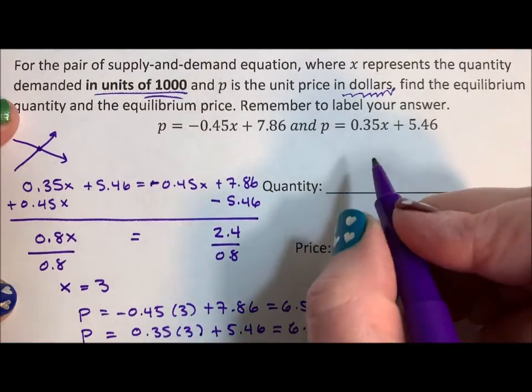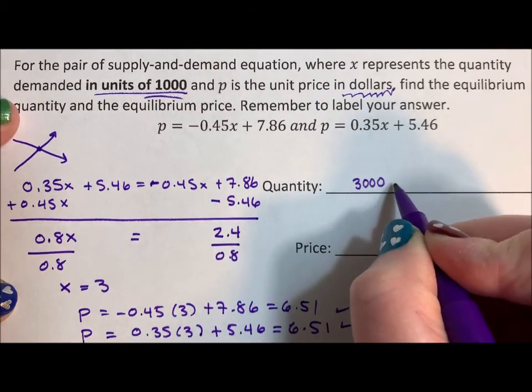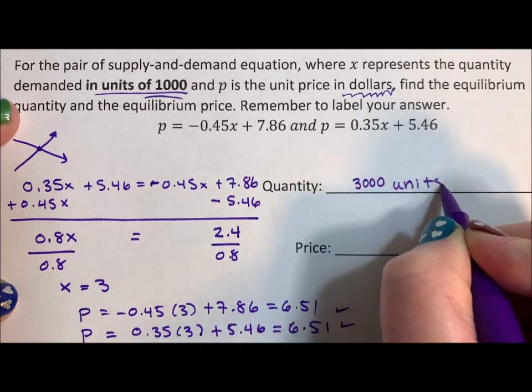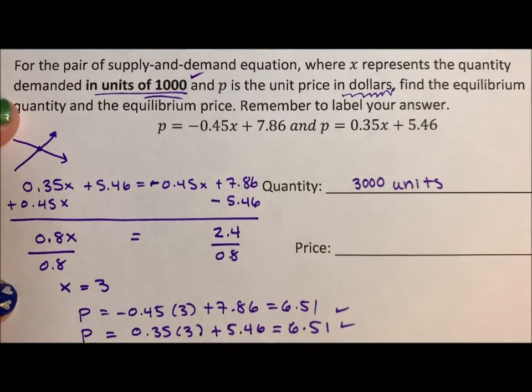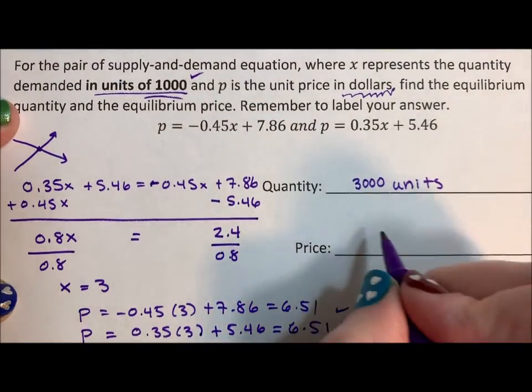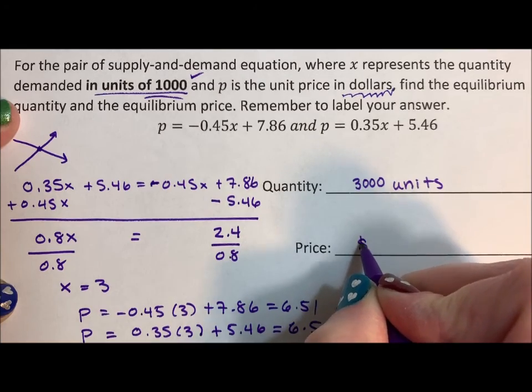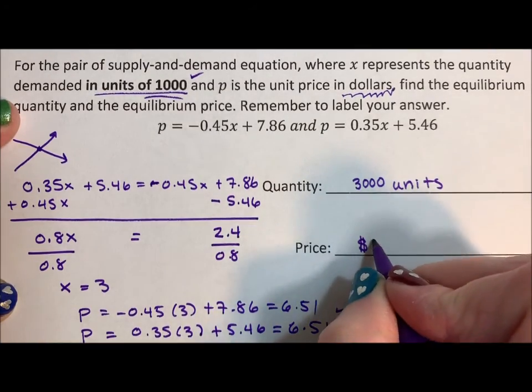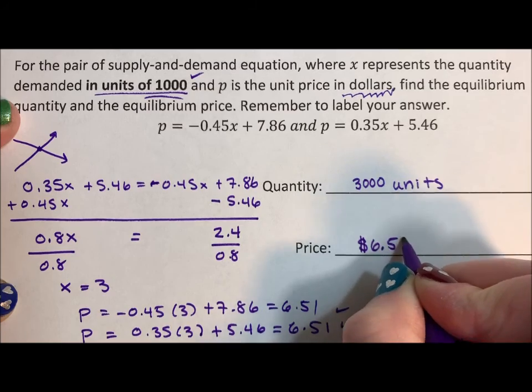So my quantity is 3,000 units, making sure I note it's in thousands. And my answer for a price is dollar sign because I always label, $6.51.